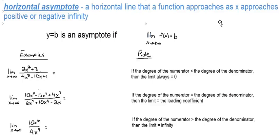Hello everybody. Here we're going to talk about horizontal asymptotes and how they're defined with calculus and limits. First of all, understand what a horizontal asymptote is. It's a horizontal line that a function approaches as x approaches positive or negative infinity.